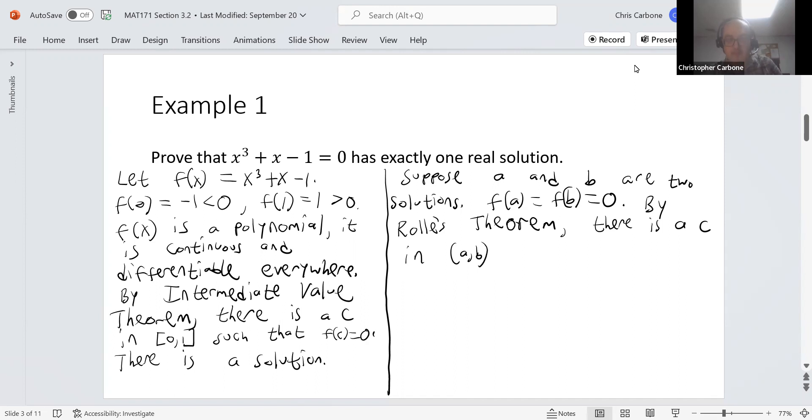Such that f prime of c is equal to zero. But we know that if we were to differentiate f, we would get 3x squared plus one. And that's greater than or equal to one since x squared is greater than or equal to zero. And this occurs for whatever value x is.